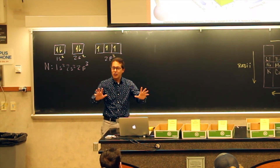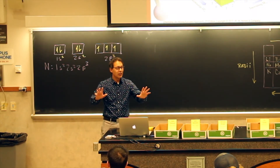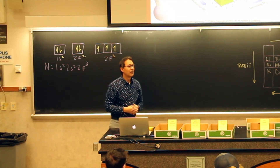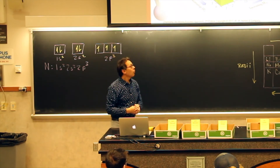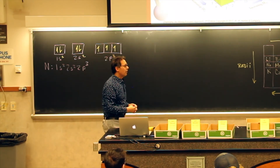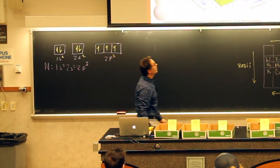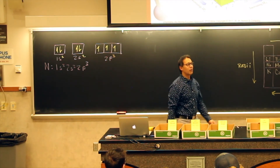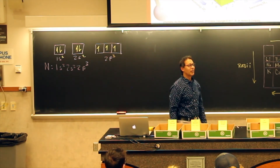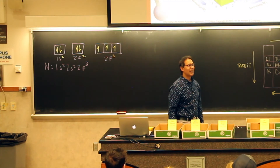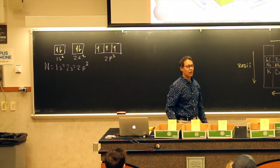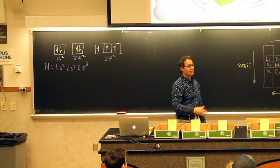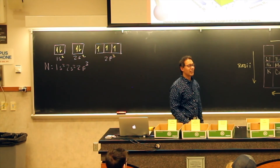Another question: why are the transition metals not on the ionization energy table? Because they're a mess — they're all over the place. The transition elements are a very complex part of the periodic table.